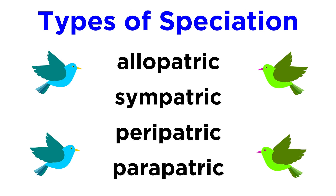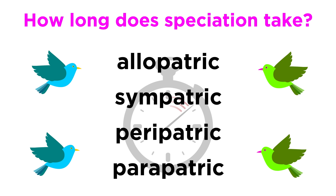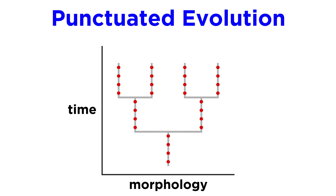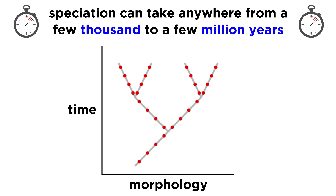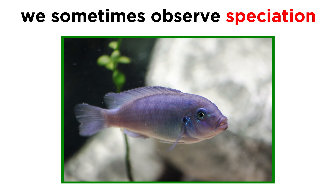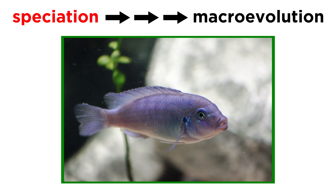So those are the types of speciation. How long does speciation take? To answer this, we look to fossils. There are many examples in the fossil record of punctuated evolution. This involves long periods of very little change, followed by sudden rapid change. Other times, species appear to have changed very gradually over long periods of time. But whichever the case may be, speciation requires anywhere from a few thousand years to a few million. This does explain why observation of speciation events is quite rare, but nevertheless they do occur, and successive speciation over long periods of time is what results in the macroevolution that has brought about everything that is alive today.